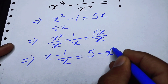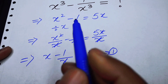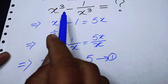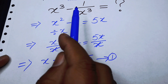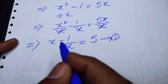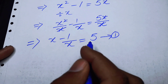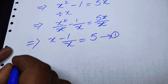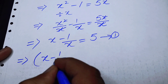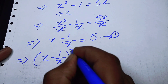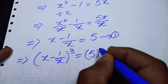I will take this as equation number 1. Now our goal is to find the value of x cube minus 1 over x cube, so we will take the cube on both sides. When we take the cube on both sides we obtain x minus 1 over x, whole cube, is equal to 5 cube.